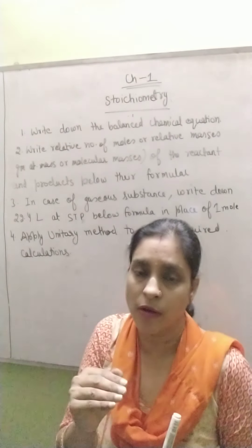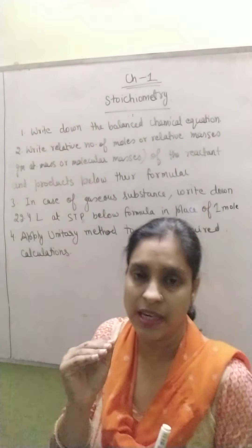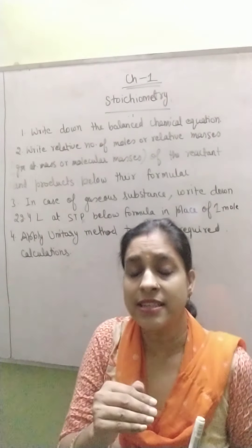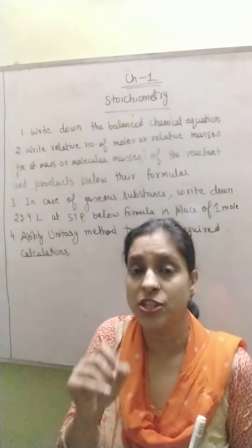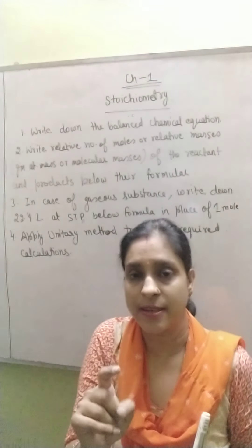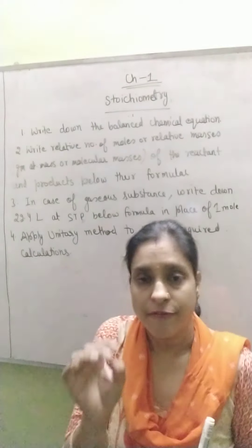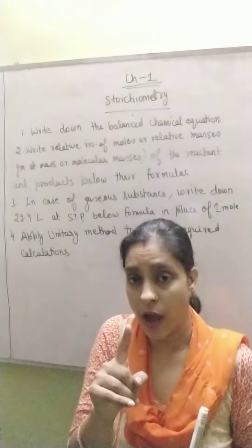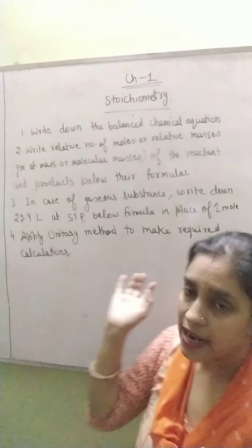Calculate the molecular masses below the chemical formula of all the chemical compounds present in that equation. If there is any gaseous compound present in the chemical reaction, then instead of writing one mole you have to write 22.4 litres at STP. If there are two moles then it will be multiplied by two, if three moles then multiplied by three. So instead of writing a mole, you have to write 22.4 litres for one mole below the chemical formula of the gaseous substance.